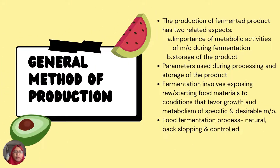The general method of production: the production of fermented food has two related aspects, which is the importance of metabolic activities of microorganisms during fermentation and the storage of the product, and the parameters used during the processing and storage of the product. Fermentation involves exposing raw or starting food materials to conditions that favor growth and metabolism of specific and desired microorganisms.